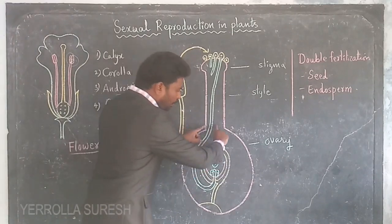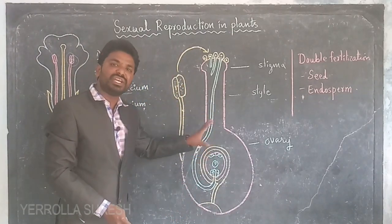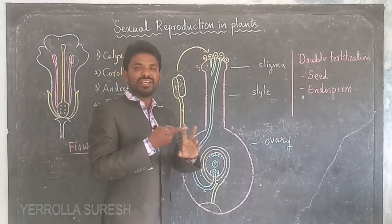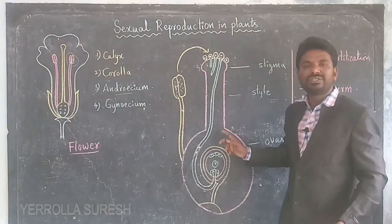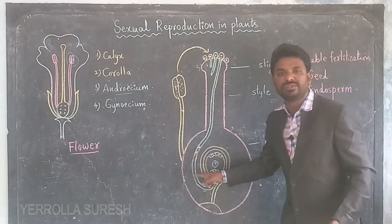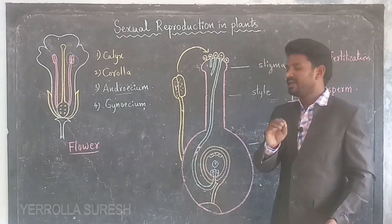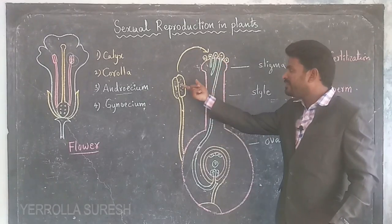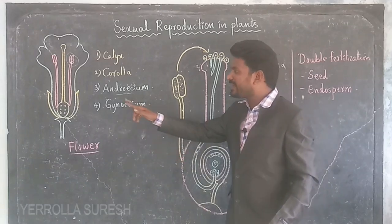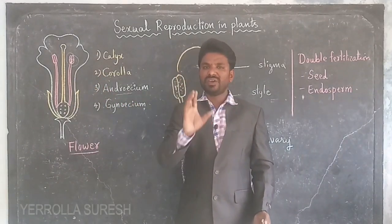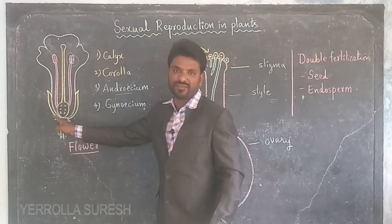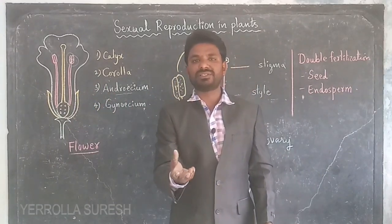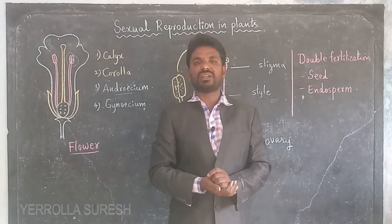After the completion of pollination and fertilization, the ovary of the flower changes into a fruit, and the fertilized ovules change into seeds. The style, stigma, androecium, calyx, and corolla all fall down — only the ovary remains. It develops into the fruit, and the ovules develop into seeds. When the seed germinates, it gives rise to a new plant. This is sexual reproduction in plants.